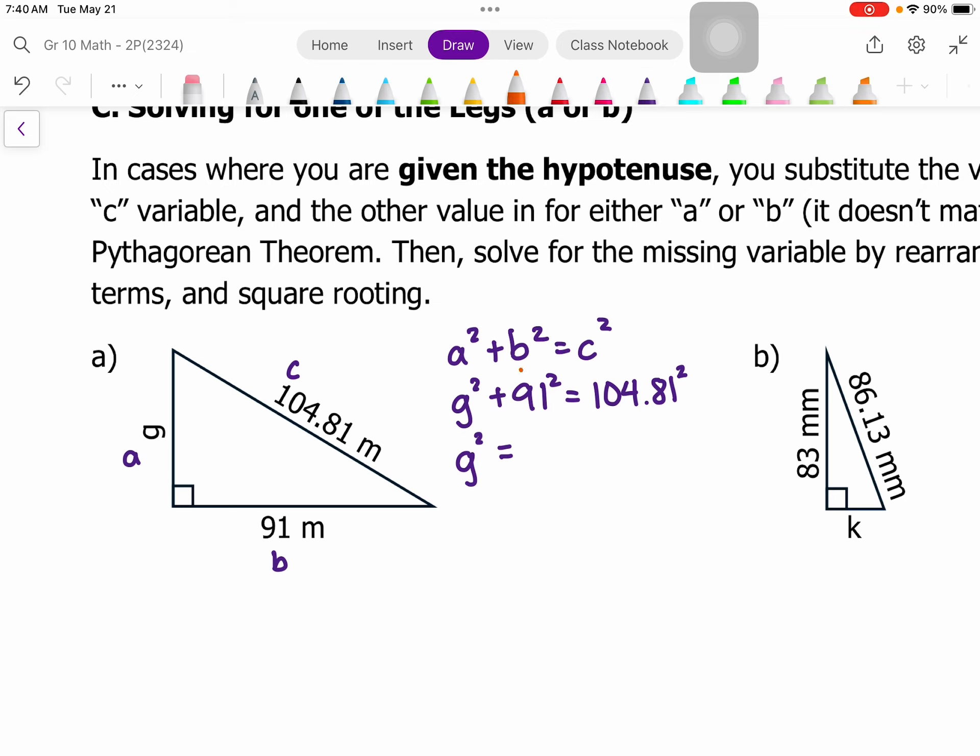And that's going to get rid of it on the left side, in front of the equal sign, and move it to the right side. So I have 104.81 squared minus 91 squared.